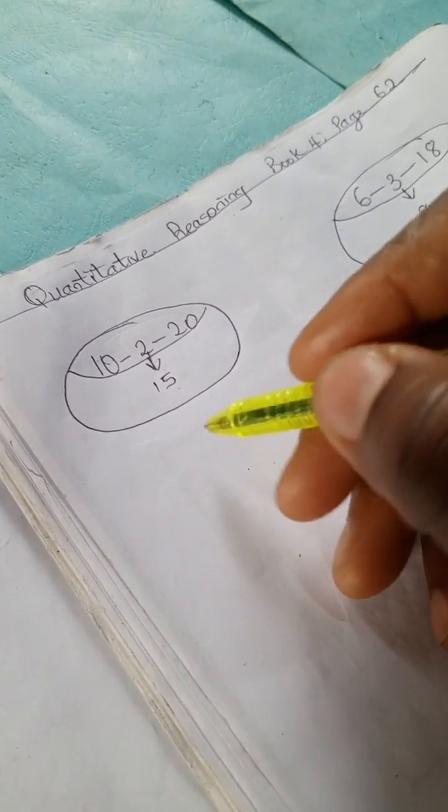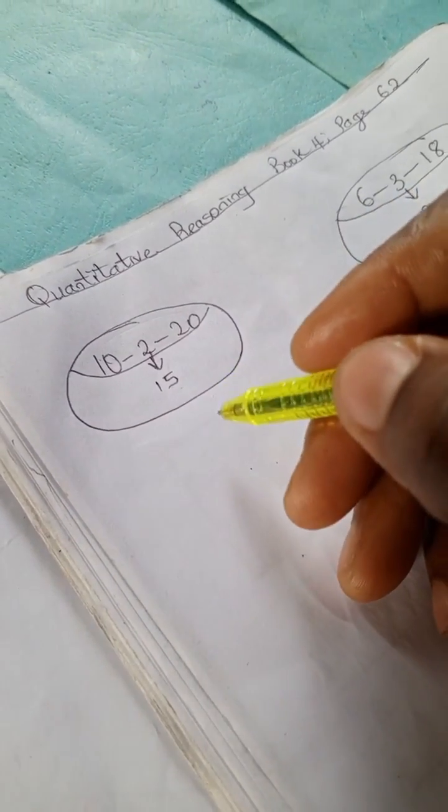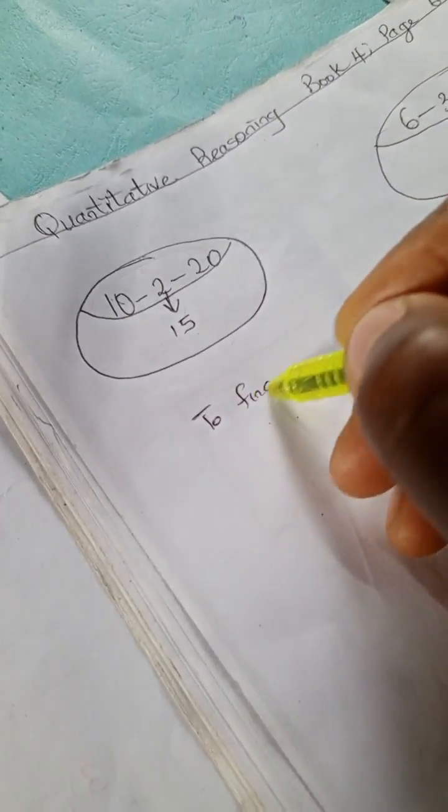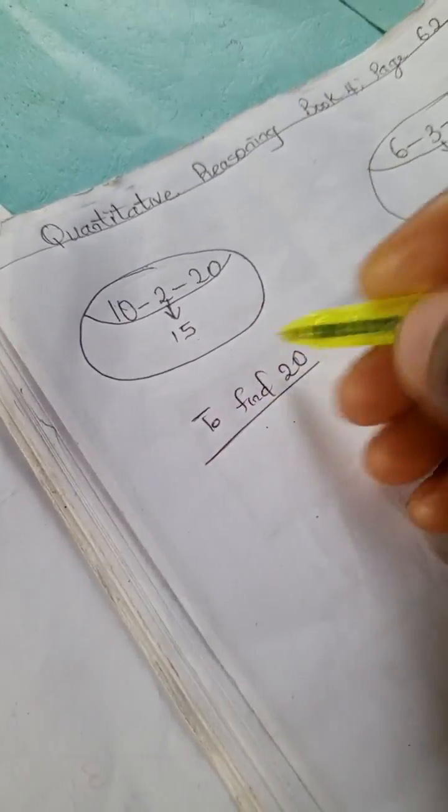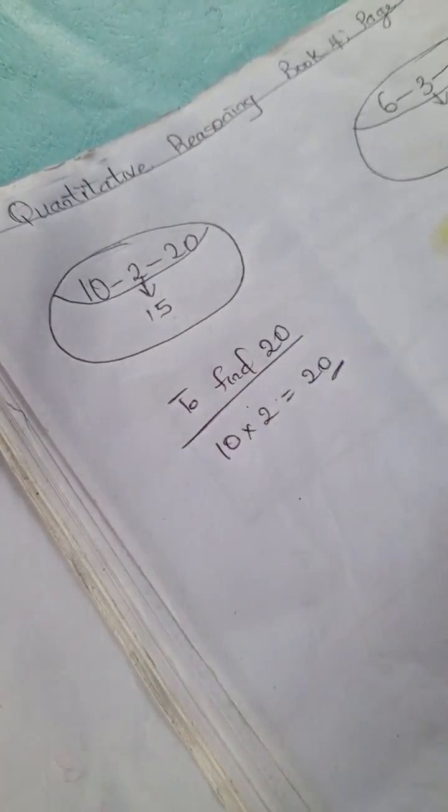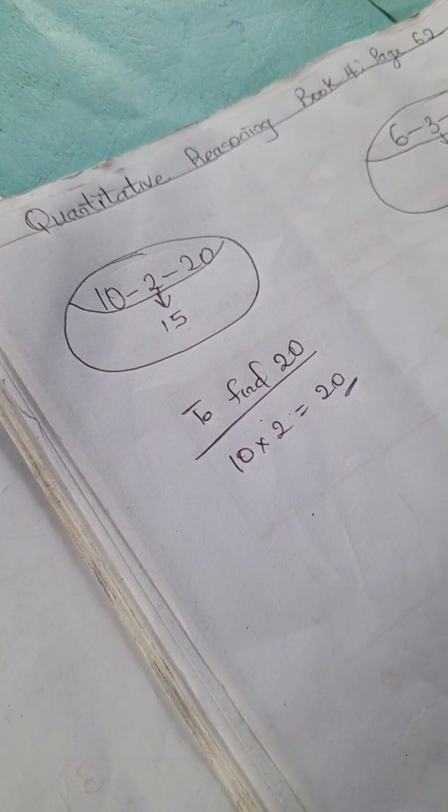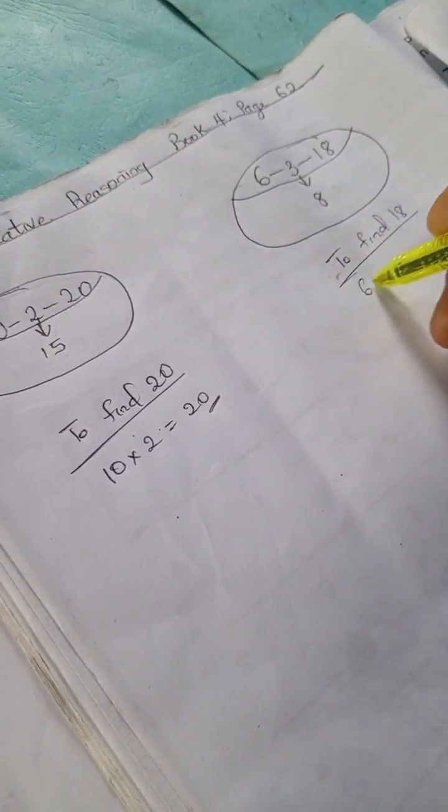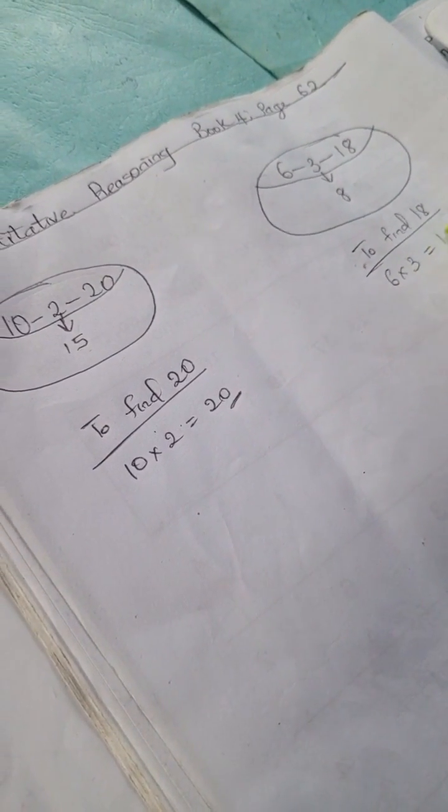Let's calculate and see what was done there. To find 20, we have 10 times 2 is 20. And let's see if it worked here. To find 18, we have 6 times 3 is 18. Right, so this worked.